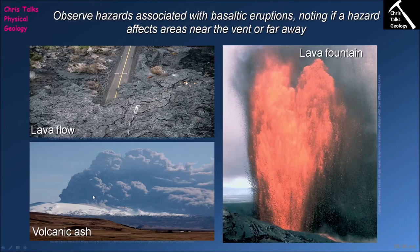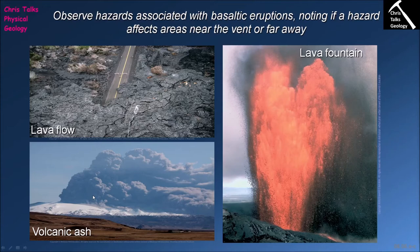Volcanic ash associated with basaltic eruptions is a very minor component because mafic lavas don't have a particularly high volatile content, making eruptions far less explosive and reducing the amount of ash produced. Typically the largest amounts of volcanic ash occur where a basaltic volcano is situated near a source of water like a lake or glacier. The heat from the volcano melts glacial ice, allowing water to percolate down into the rock where it interacts with lava, increasing the volatile content and causing explosive eruptions. This situation is on the whole relatively rare.